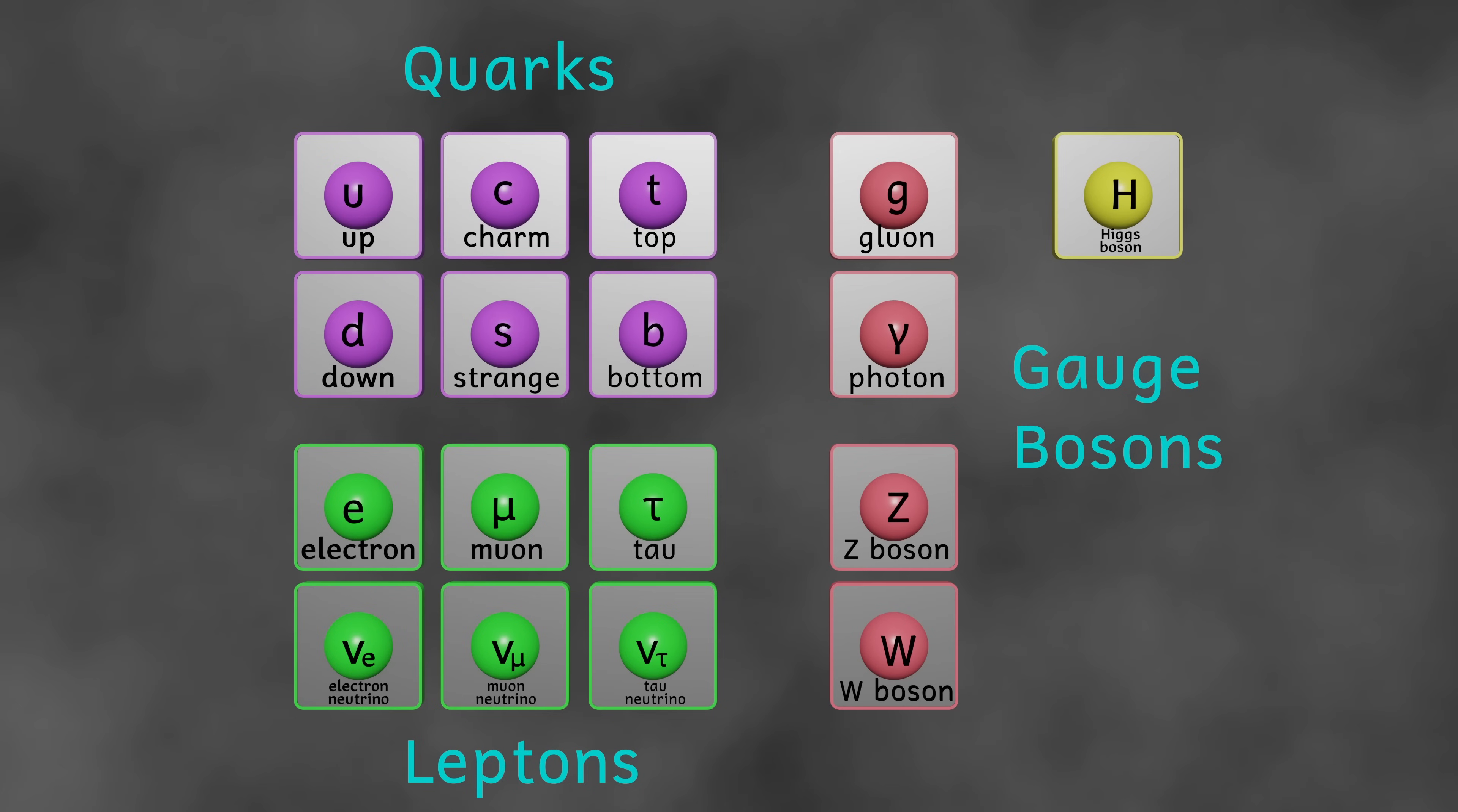And before we go any further, we need to have a quick talk about particles. We tend to think of particles as little blobs of matter. After all, we are made of particles. At the quantum level, however, particles aren't really blobs of matter at all. They are energy fluctuations in the fields that pervade all of reality.